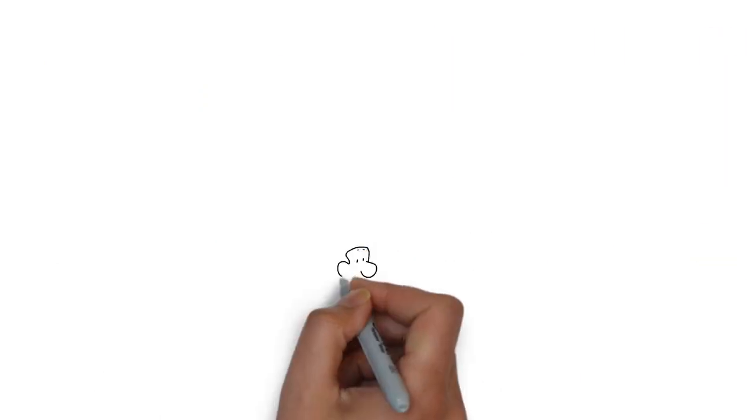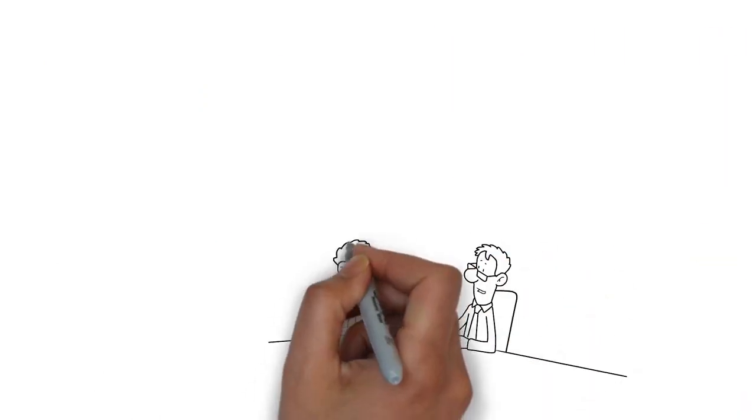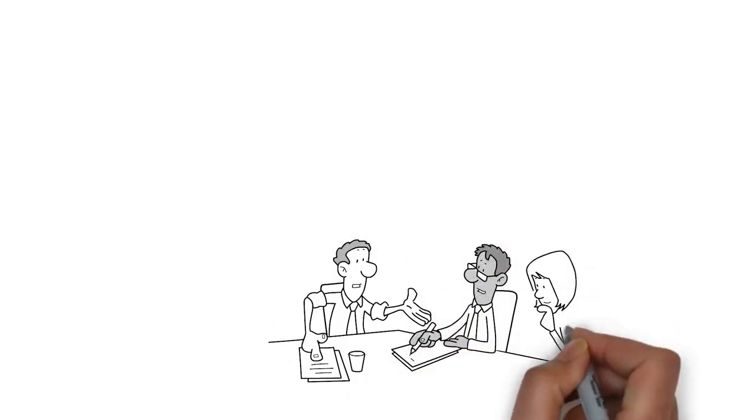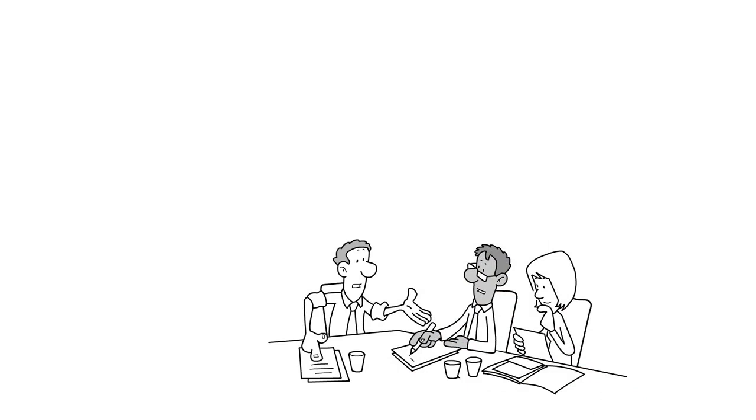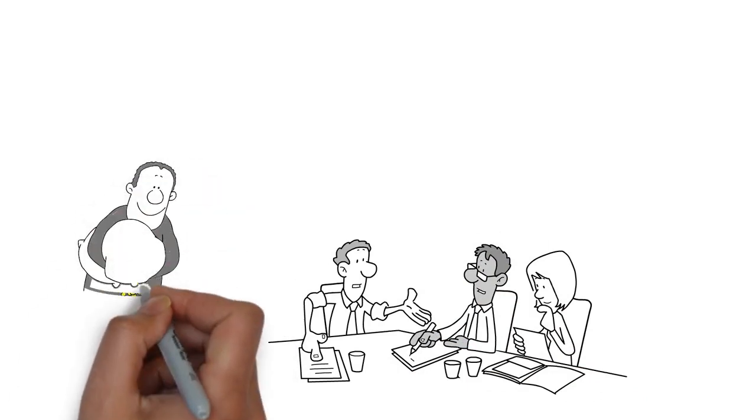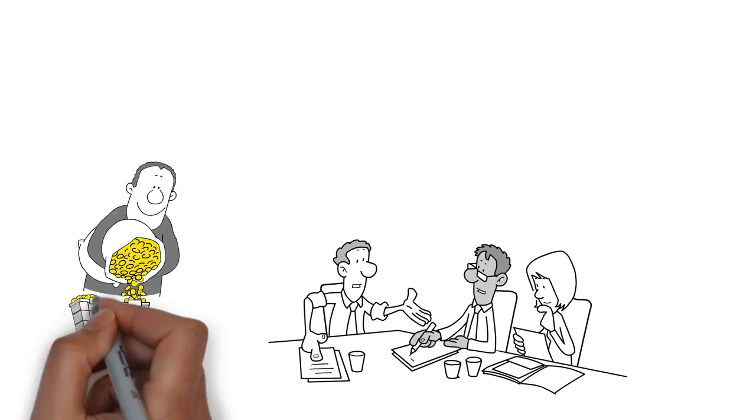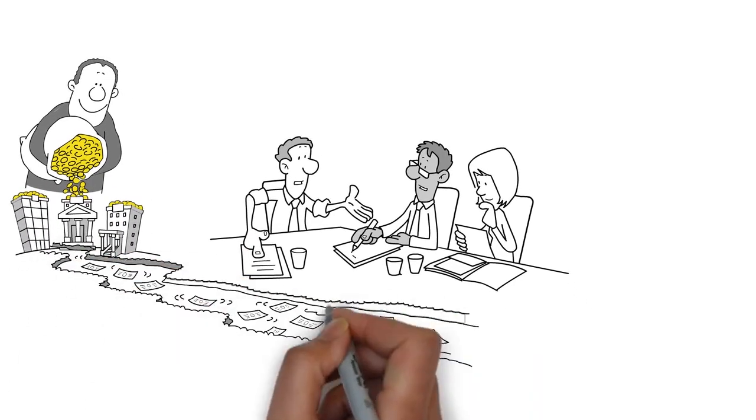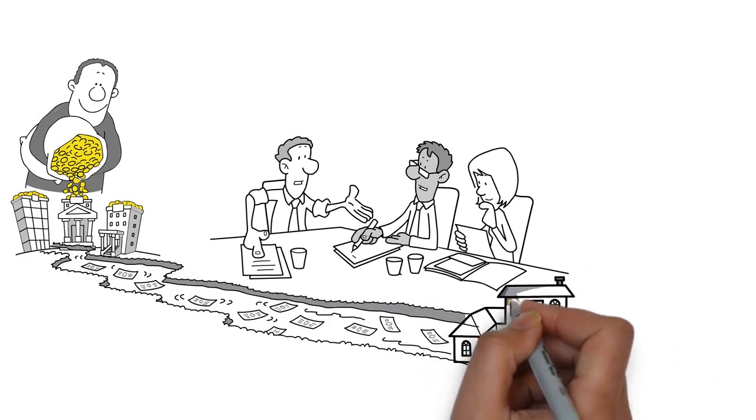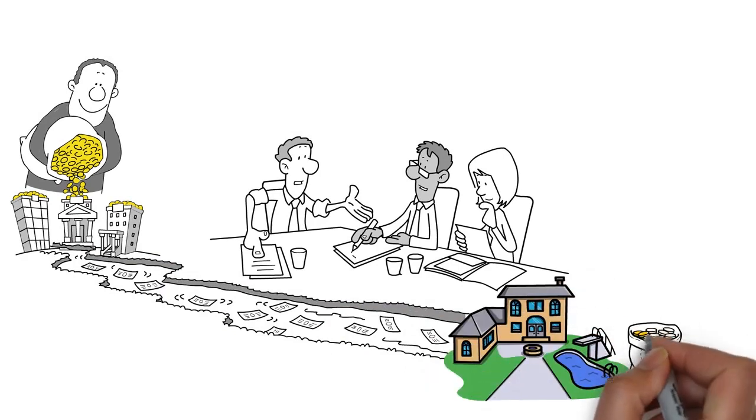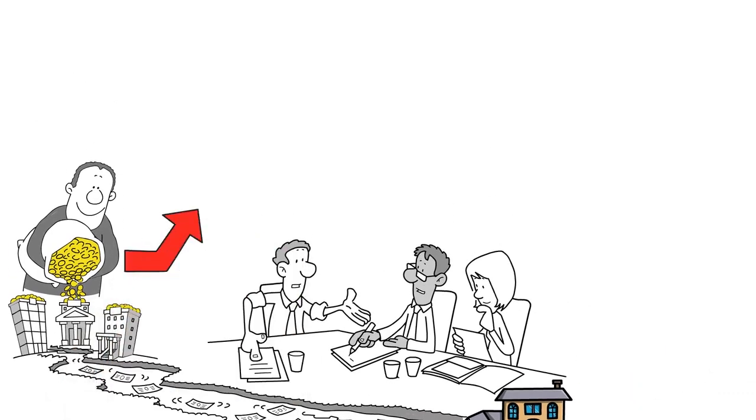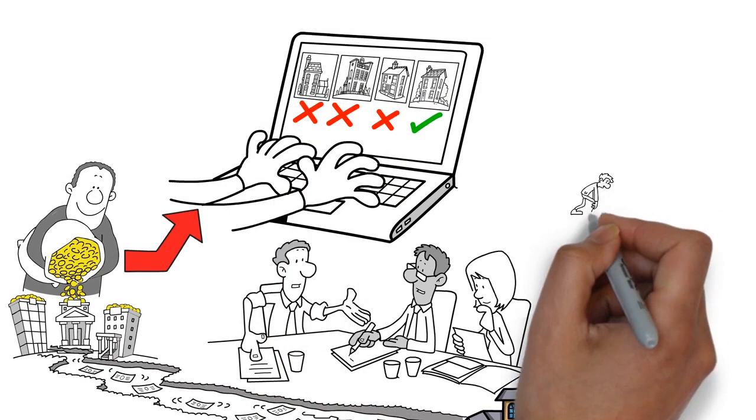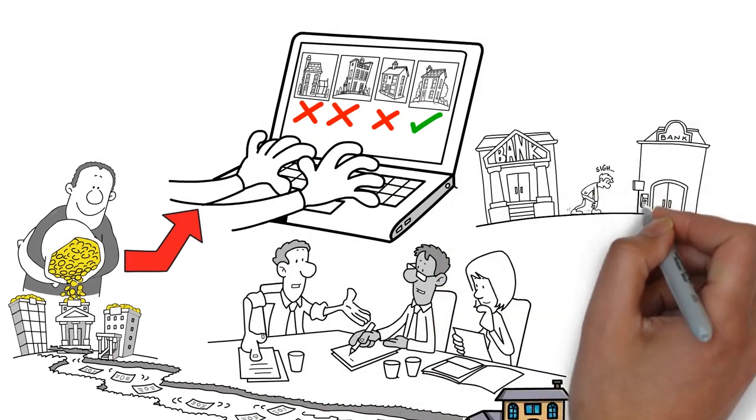It is important to note that what is considered a good debt or a bad debt can vary depending on an individual's circumstances and priorities. For example, a mortgage on a rental property could be considered a good debt if the rental income generated covers the cost of the mortgage and generates a profit, while it could be considered a bad debt if the rental income is insufficient to cover the mortgage and the property is not expected to appreciate in value.